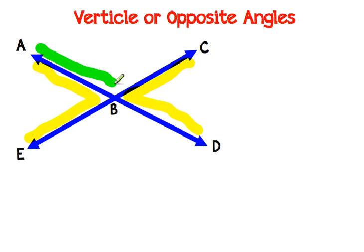There's another set of vertical or opposite angles in this picture highlighted in green. Again they are across from each other or opposite each other. So angle ABC is opposite angle EBD.